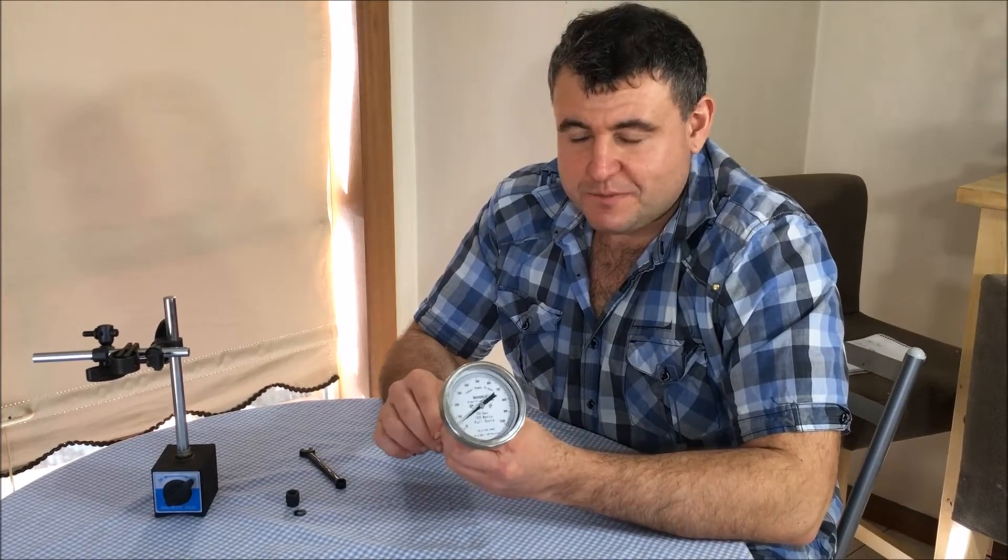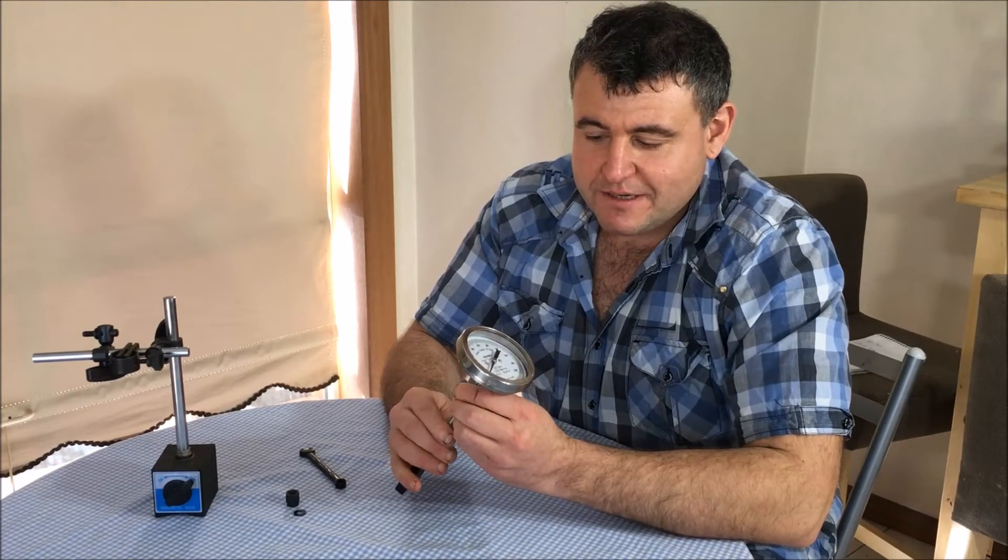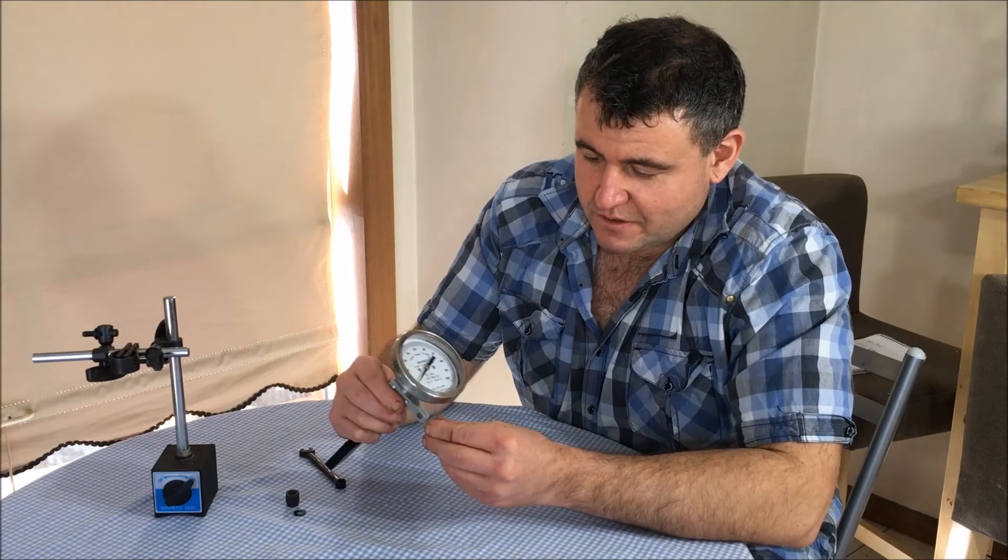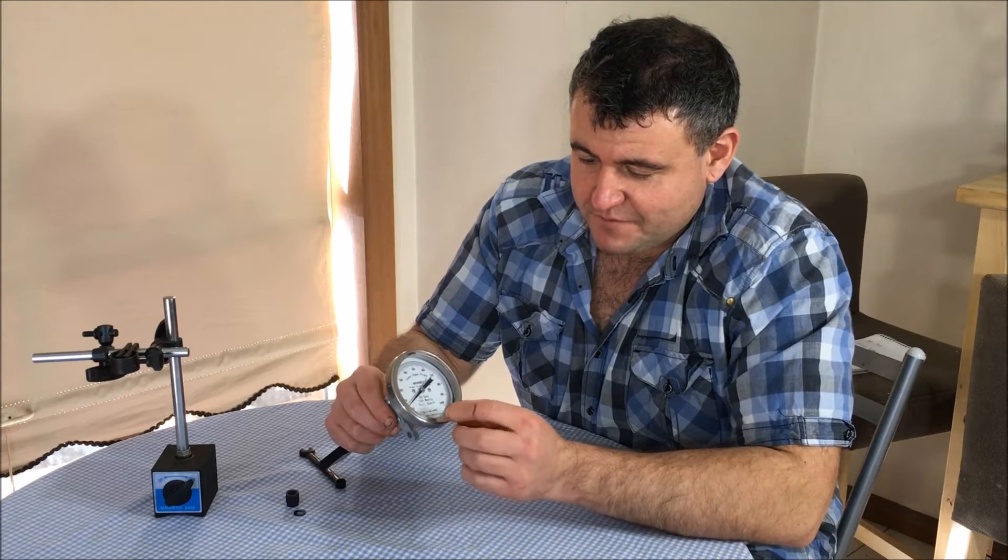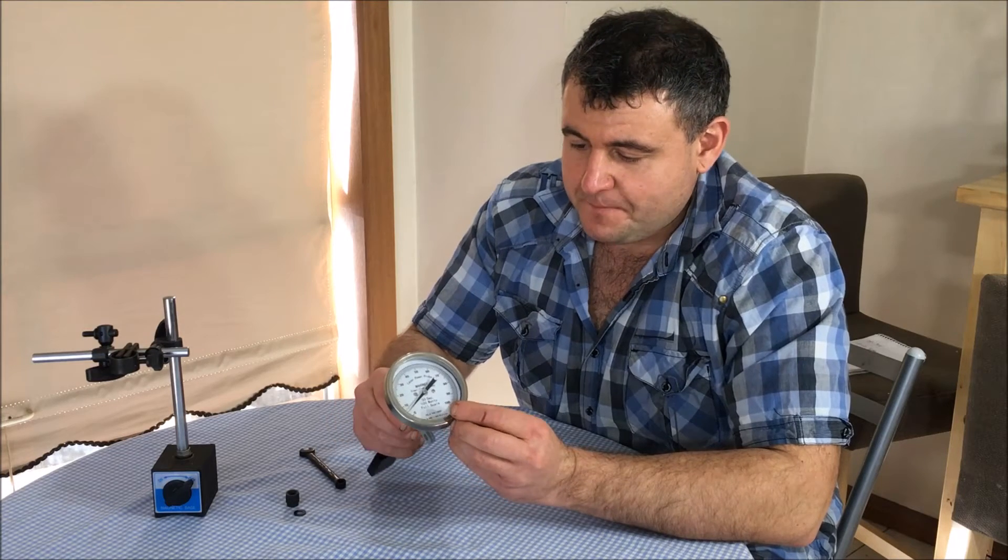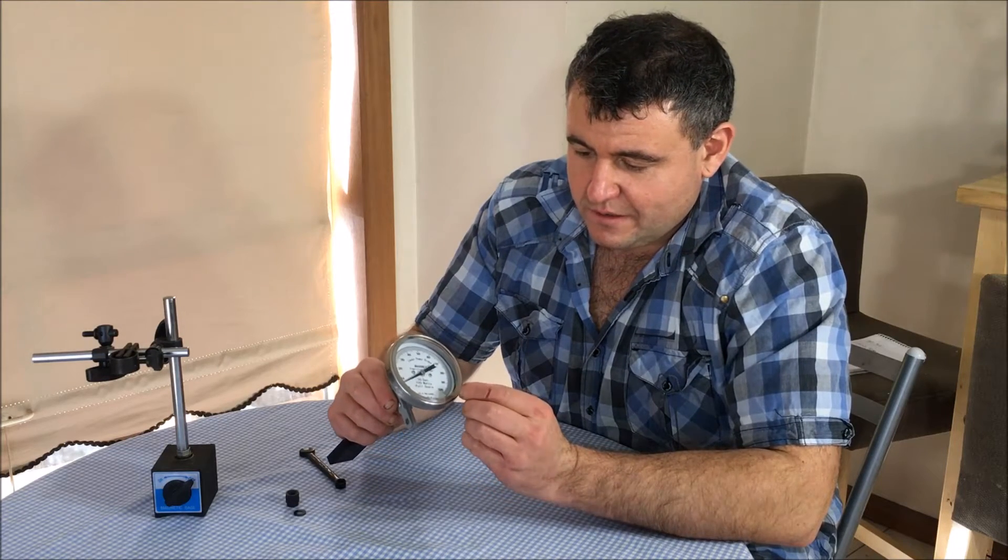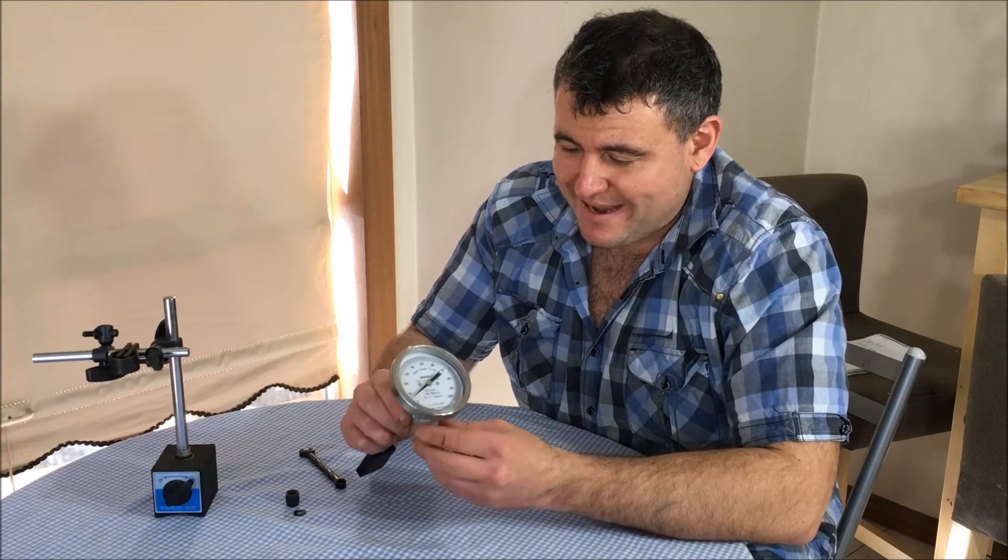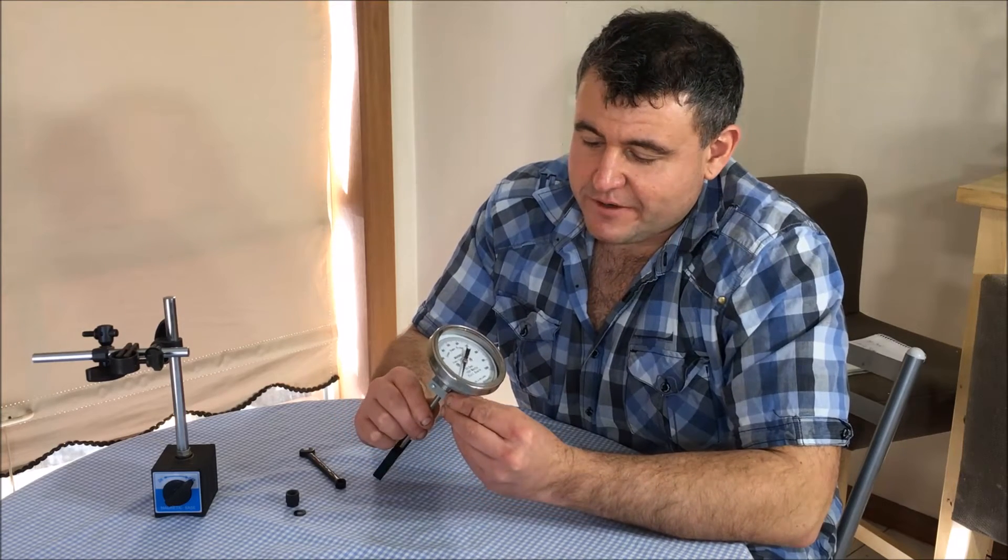To make our laser power measurement, we're going to need this device, the Mahoney Laser Power Pro. This one has been specifically made for CO2 and YAG lasers, and I've purchased one with a scale up to 100 watts, which will be ample for the 50 watt machine I'm going to measure on.